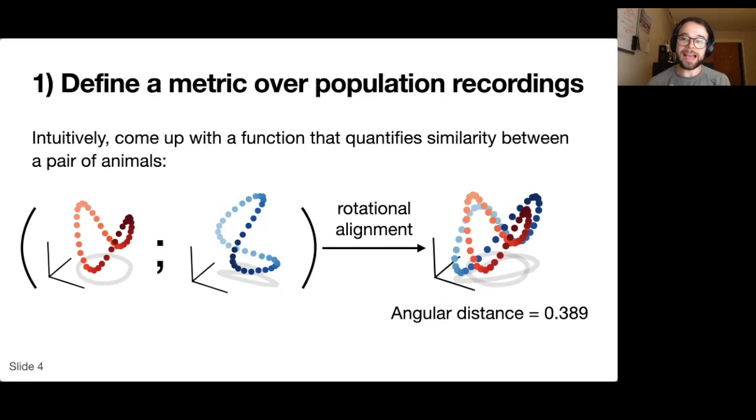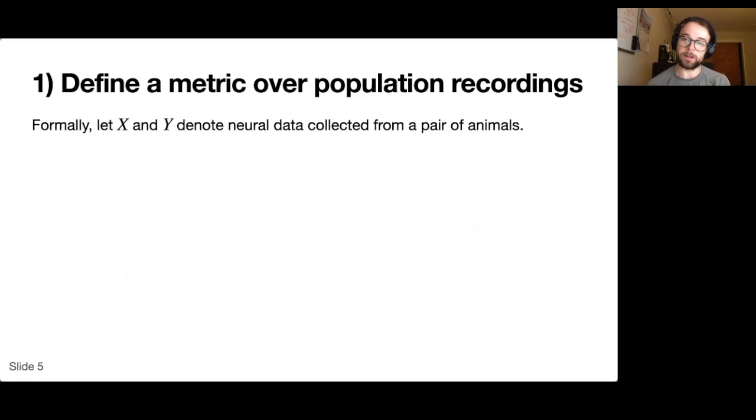But what you should be asking is, is this a justified method for quantifying differences across animals? One of the contributions of our work is to argue that yes, this is a rigorous method. It's rigorous because we can prove that it satisfies three properties that we would like in a distance function.